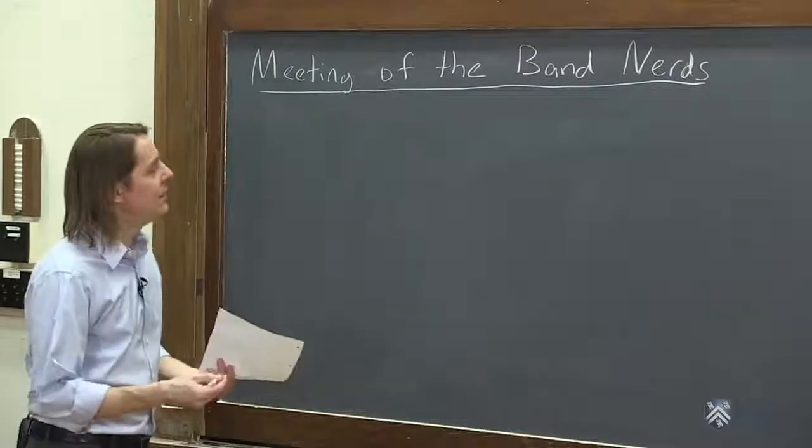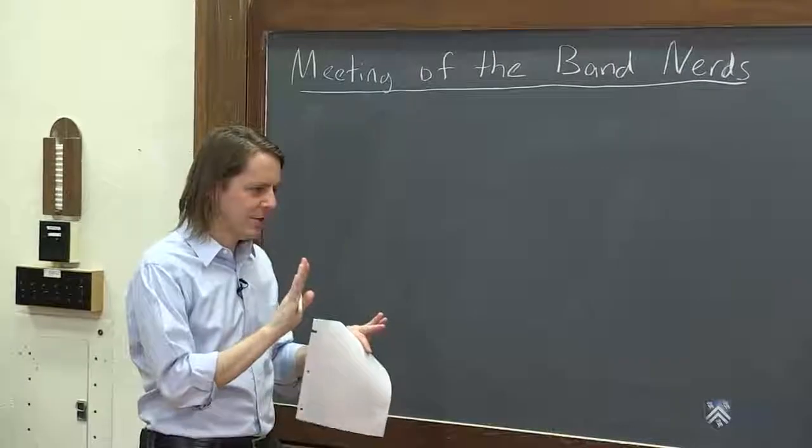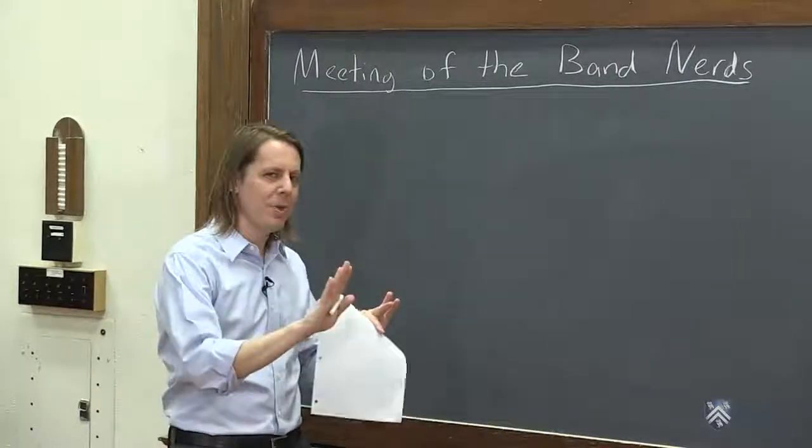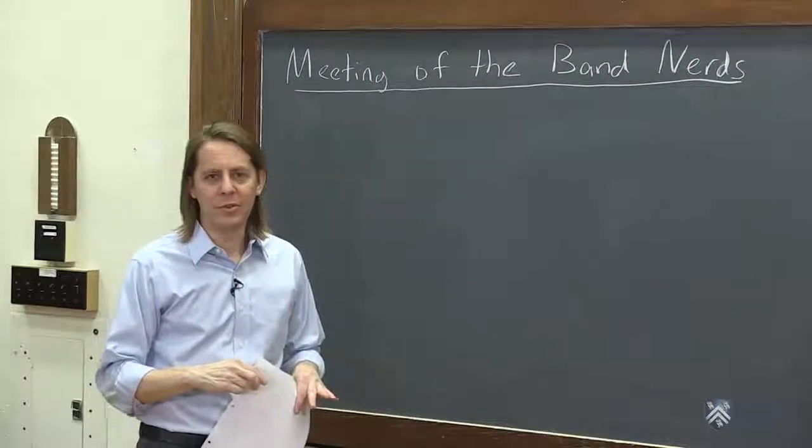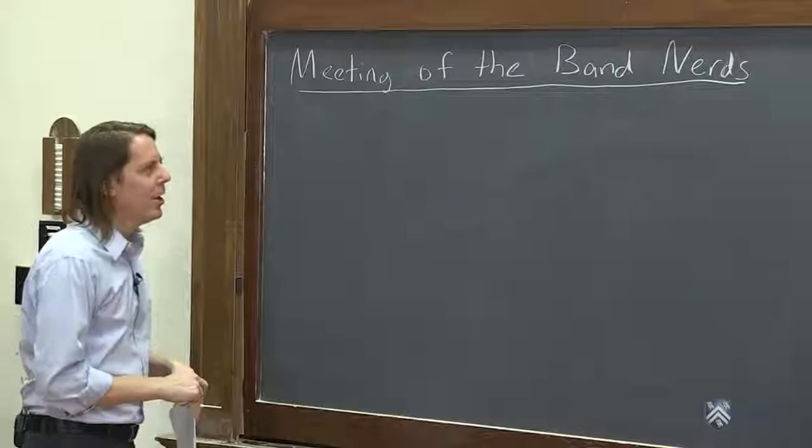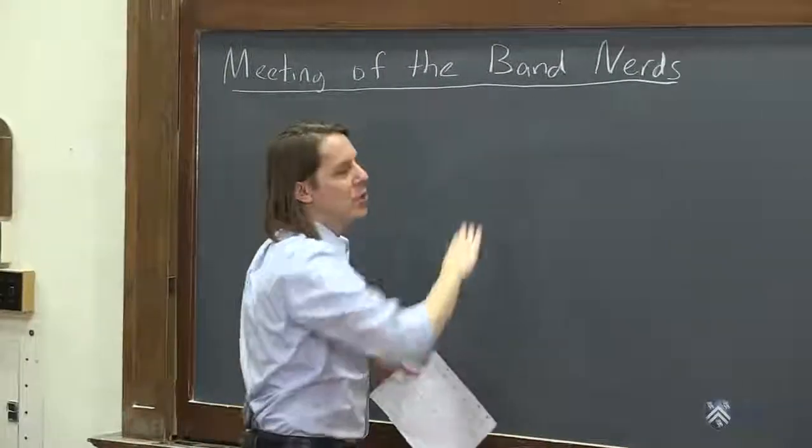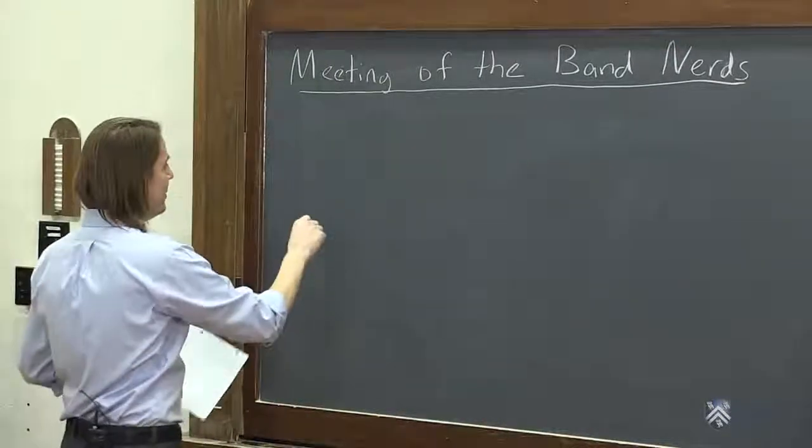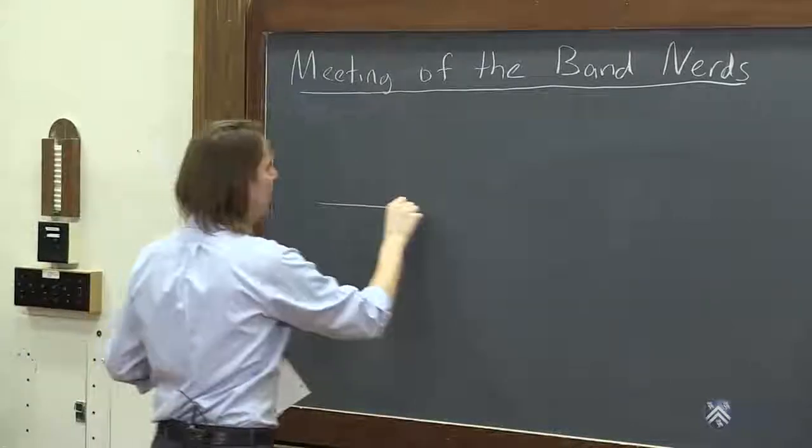So the first kind I'm going to show you is called, I call it a two-body problem. Let's not just keep up with one object in one-dimensional kinematics. Let's keep up with two objects and keep up with maybe their relative position or something like that. That really makes you use the equations in a way that you understand them. I call this one the meeting of the band nerds. If this offends you, you could call it the meeting of the marchers if you're sensitive or you have sensitive students.